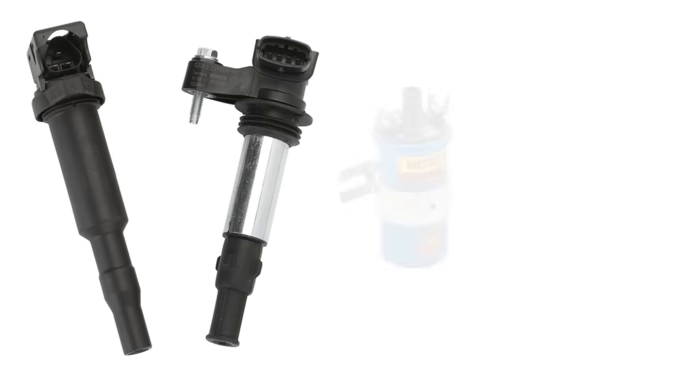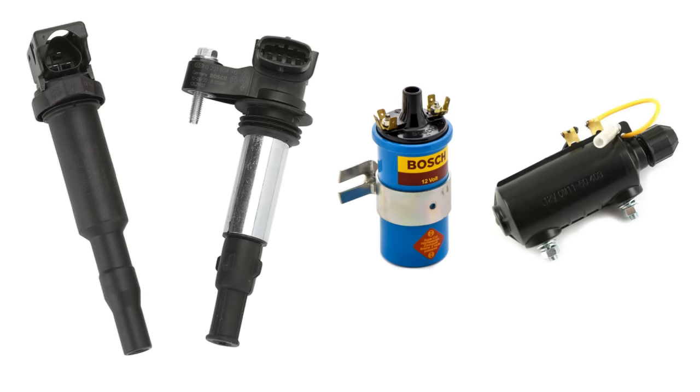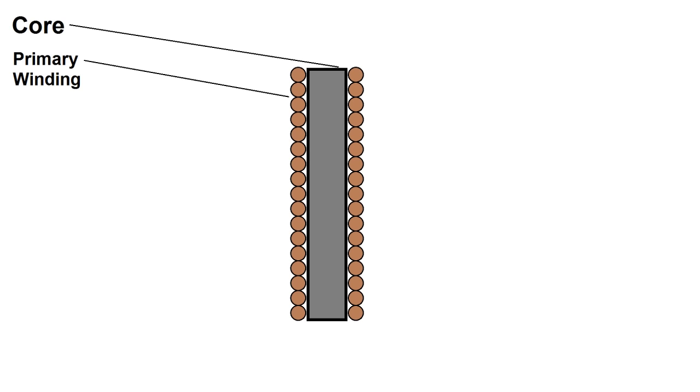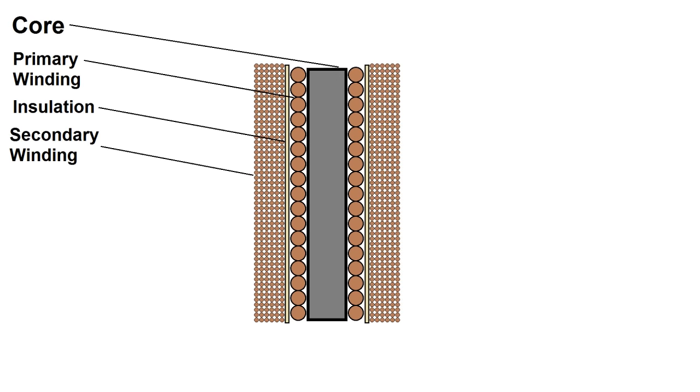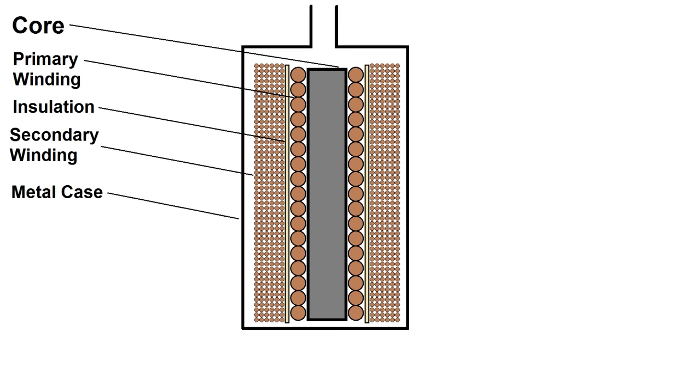Ignition coils come in many shapes and sizes, but on the inside they're all essentially the same. A primary coil is wrapped around a ferromagnetic core, which is usually ferrite or something similar. The primary is covered in electrical insulation and the secondary winding is wrapped directly over it. The whole assembly is encased in a metal can and usually flooded with oil to prevent arcing and to keep things cooler.